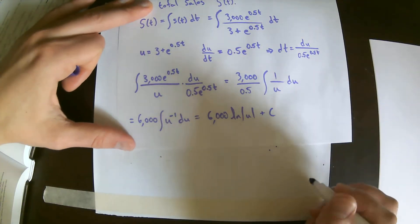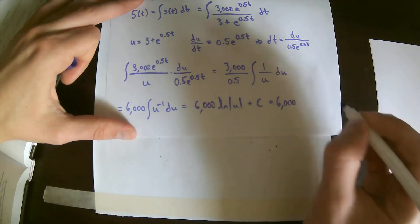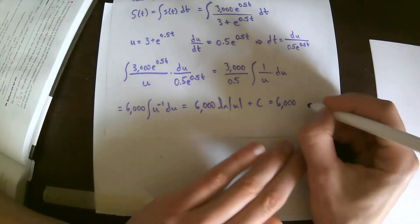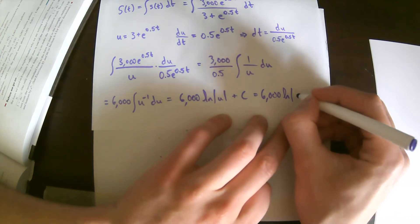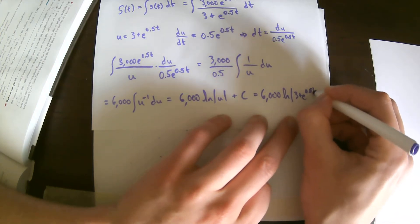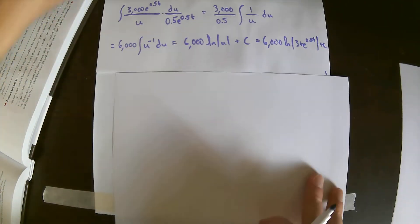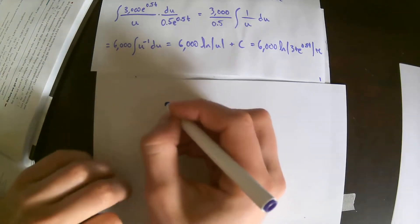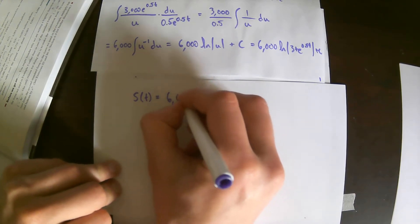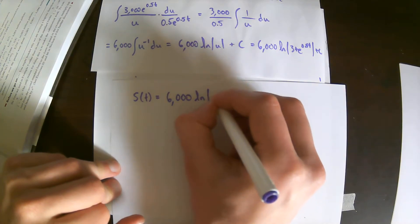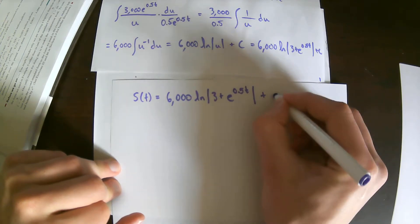So we get 6000 times ln of u, plus a constant of integration. Substituting back, u equals 3 plus e to the 0.5t, so capital S of t equals 6000 times ln of the absolute value of 3 plus e to the 0.5t, plus C.